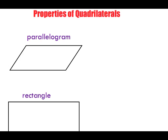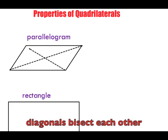Here we have the first shape — a parallelogram. If we were to draw diagonals from each point, the diagonals will bisect each other. This means that in this line, this length is equal to that length, and with this bisecting line, this length is equal to that length.